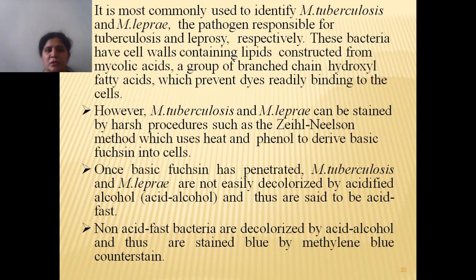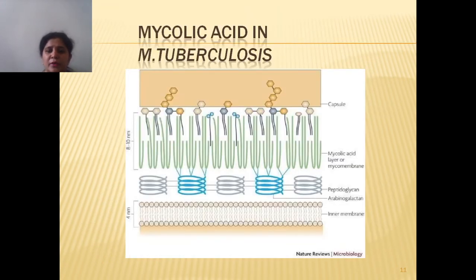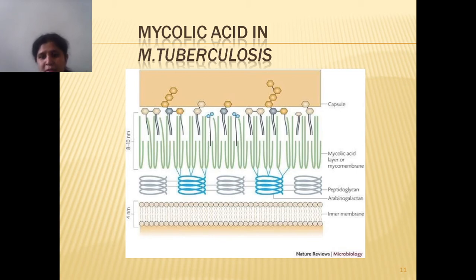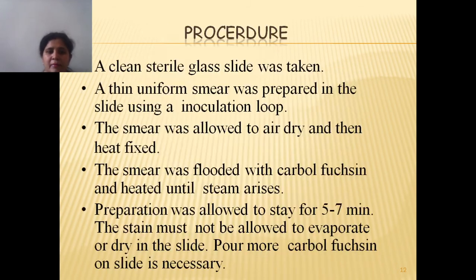Acid-fast staining is most commonly used to identify Mycobacterium tuberculosis and M. leprae, the pathogens responsible for tuberculosis and leprosy. These bacteria contain a higher percentage of lipid within their cell wall, which is mainly constructed from mycolic acids. You can see the cell wall of Mycobacterium tuberculosis with large numbers of mycolic acid layers or mycomembranes present within the cell membrane.